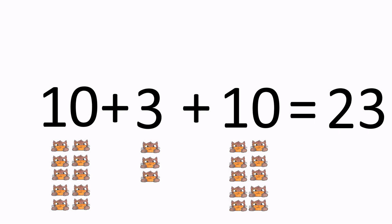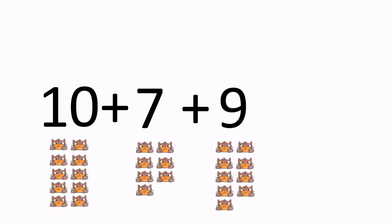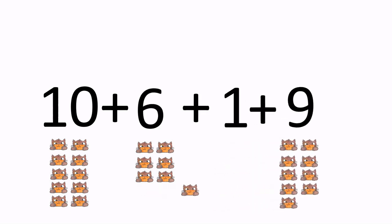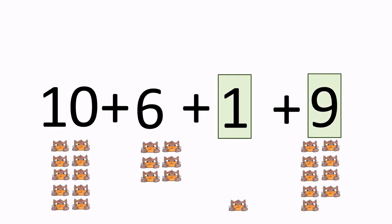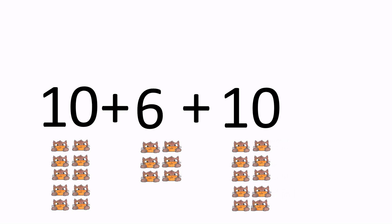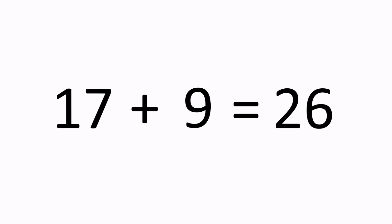Making groups of 10 when performing addition is called regrouping, and it is a mental math strategy. Let's practice addition using the regrouping strategy. How much is 17 plus 9? We can write 17 as 10 plus 7, and we can write 7 as 6 plus 1. That way we have 10 plus 6 plus 1 plus 9. And 1 plus 9 is 10, so now we have 10 plus 6 plus 10, which equals 26. So 17 plus 9 equals 26.